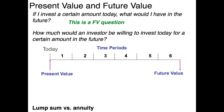This becomes important when we start using our time value of money tables, because we need to know which table to look at. On our timeline, we have the present value today, six time periods, and the future value. If I invest $1,000 today at 10% annual interest, what would I have six years from now? Notice the question mark is under the future value — that means this is a future value question.